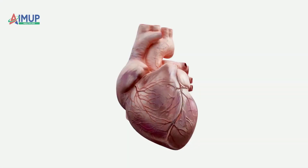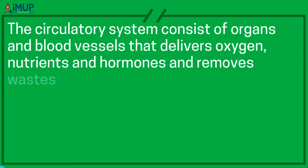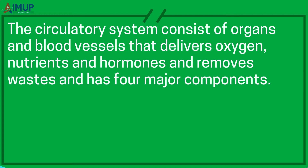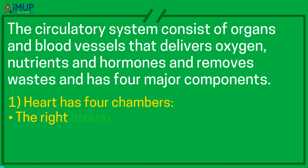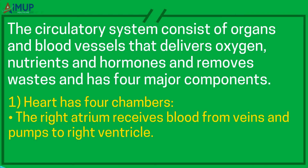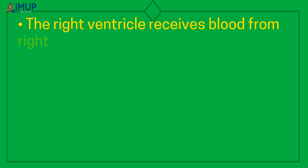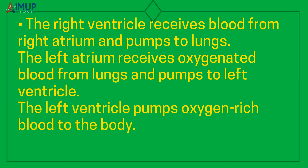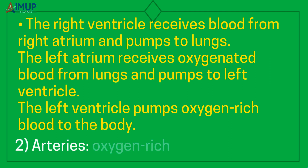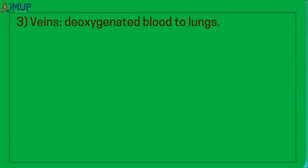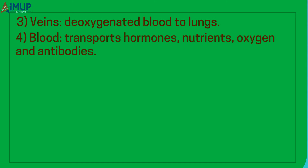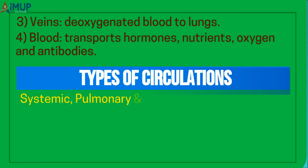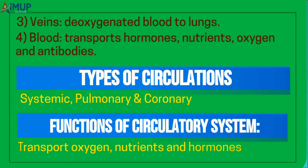The circulatory system consists of organs and blood vessels that deliver oxygen, nutrients, and hormones and remove wastes. It has four major components. The heart has four chambers: the right atrium receives blood from veins and pumps to the right ventricle; the right ventricle pumps to the lungs; the left atrium receives oxygenated blood from the lungs and pumps to the left ventricle; and the left ventricle pumps oxygen-rich blood to the body. Arteries carry oxygen-rich blood from the heart. Veins carry deoxygenated blood to the lungs. Blood transports hormones, nutrients, oxygen, and antibodies. Types of circulation include systemic, pulmonary, and coronary.